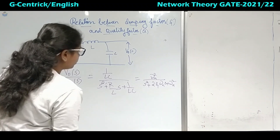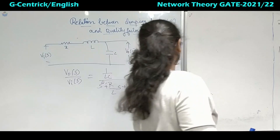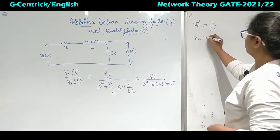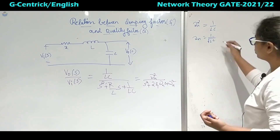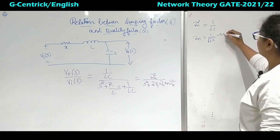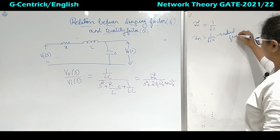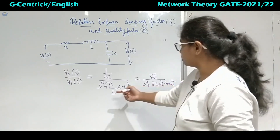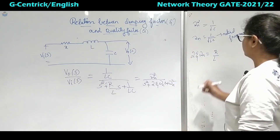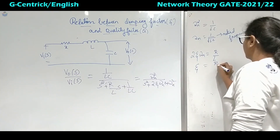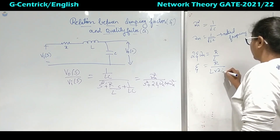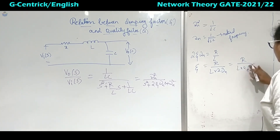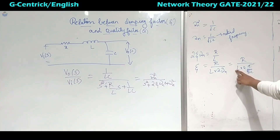Comparing the two equations, omega_N squared equals 1/LC, so omega_N equals 1 by root LC. In network terminology this is the resonant frequency; in control terminology it is the natural frequency. Comparing the second term, 2·zeta·omega_N equals R/L. Therefore zeta equals R divided by (L times 2·omega_N), and substituting omega_N equals 1/root LC gives zeta equals R/(2) times root(LC)/L.